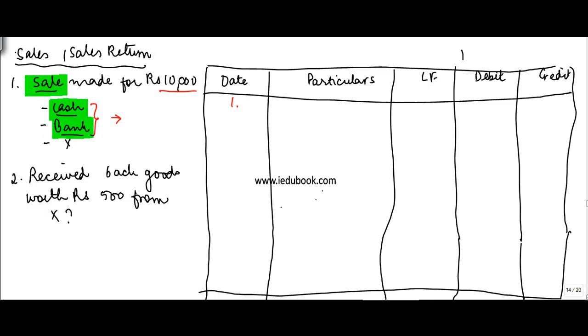Now when you do a sale for cash or bank, you will receive either cash or you will get a cheque which you put in your bank account. Both these are asset accounts. There is an increase in the asset account, and we know that an increase in an asset account is debited. So I will debit cash/bank by 10,000.